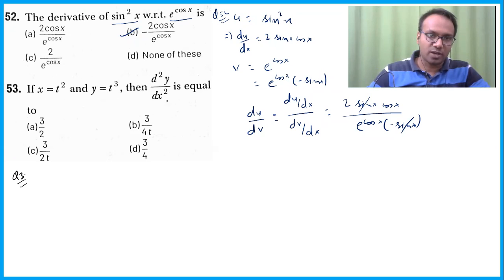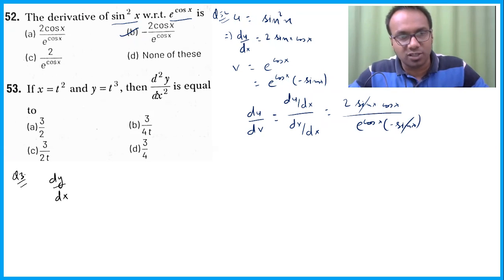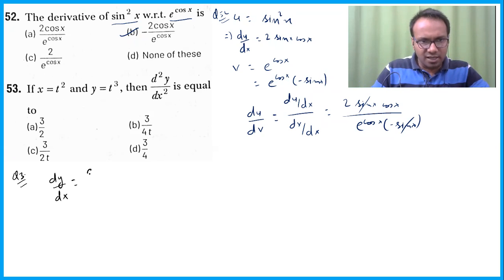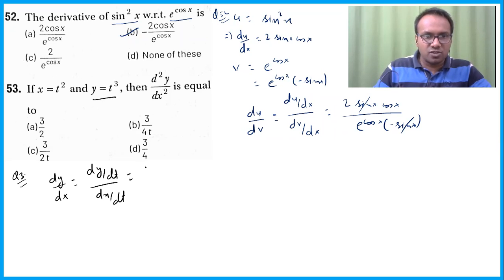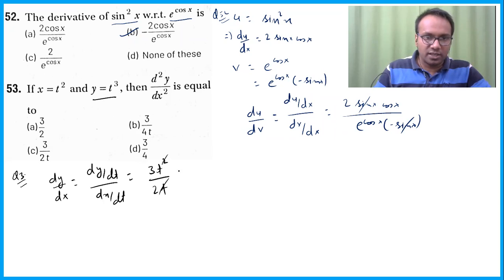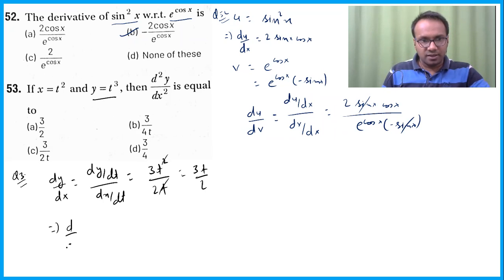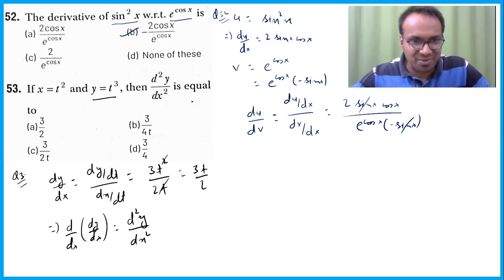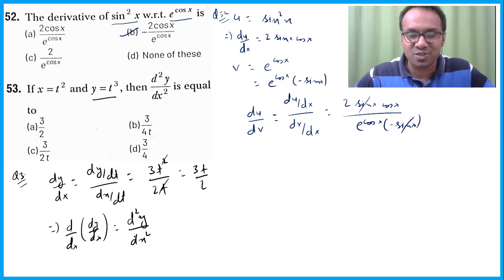Next question: here we need to find dy/dx first, because for the second order derivative, we need the first order. In parametric form, dy/dx = (dy/dt) / (dx/dt). If y = t³ then dy/dt = 3t². If x = t² then dx/dt = 2t. So dy/dx = 3t²/2t = 3t/2.